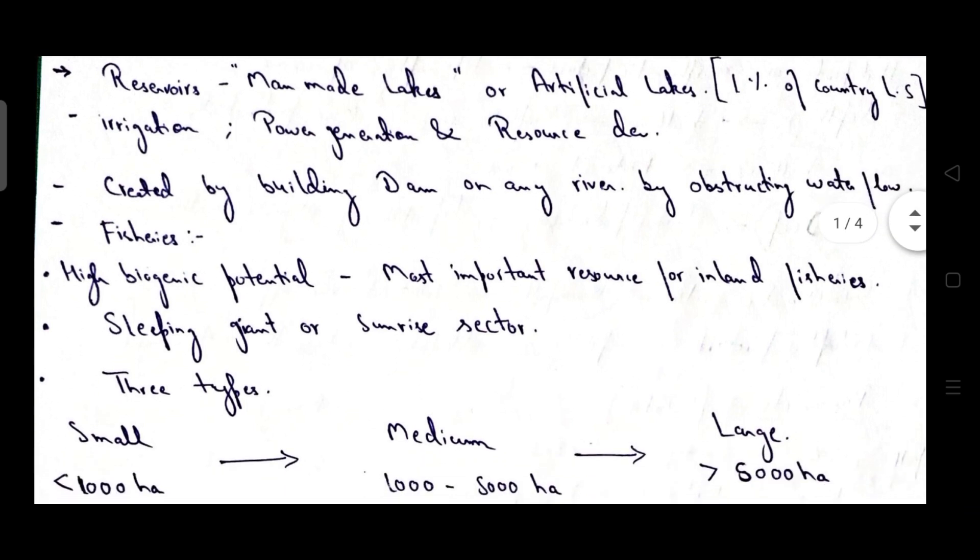First of all, the definition of reservoirs. It is a man-made lakes or artificial lakes that are created by building dam on any river by obstructing the water flow of river. What is the use of reservoirs? So basically they are used for irrigation purpose, power generation purpose and resource development purpose. And when I say resource development, I mean that they are used for the cultivation of aquatic organisms.